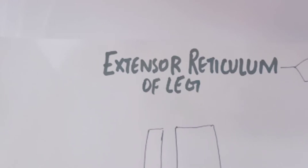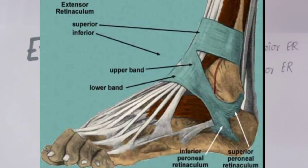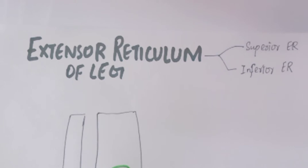Extensor retinacula of the leg. There are two types of extensor retinacula in our leg: the superior extensor retinacula and the inferior extensor retinacula.